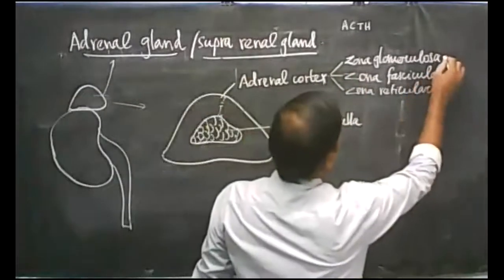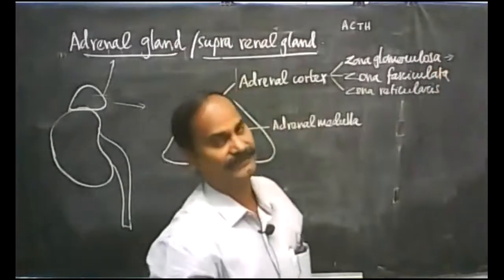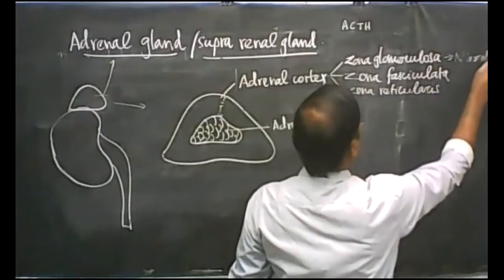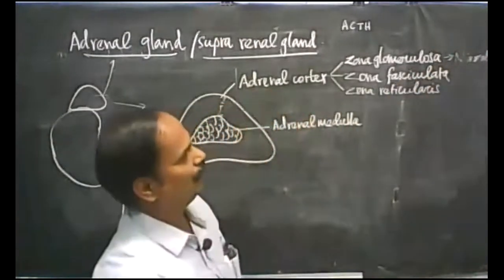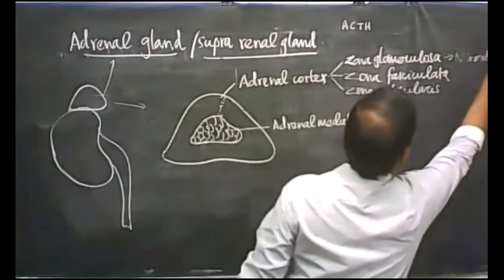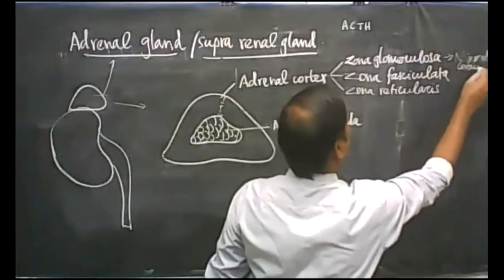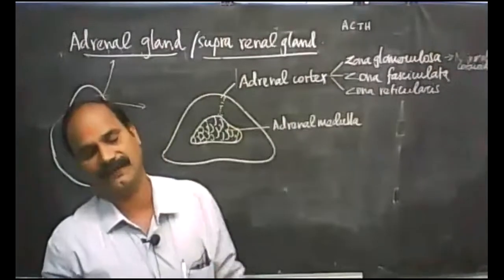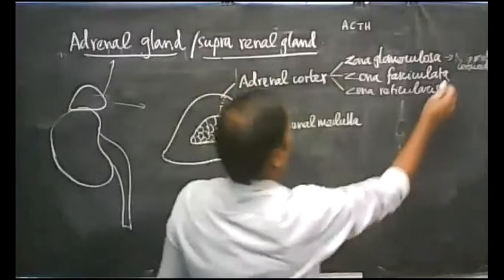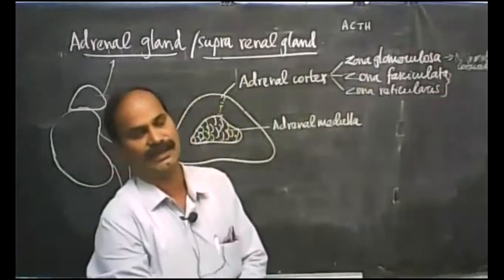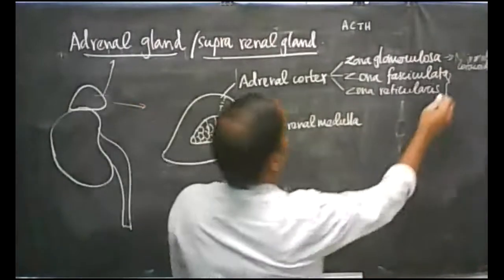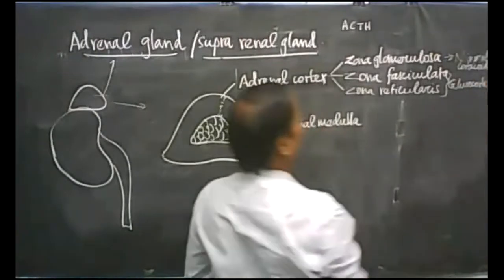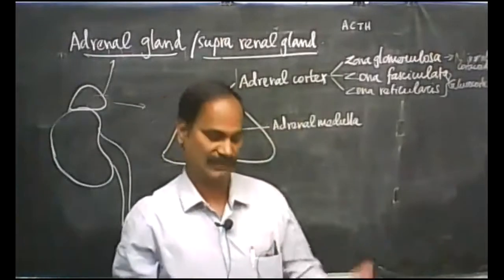Zona glomerulosa acts as a single unit and secretes a hormone called the mineralocorticoid hormone. The major mineralocorticoid hormone is aldosterone. Zona fasciculata and zona reticularis together as a single unit secrete a hormone called glucocorticoid hormone. The major glucocorticoid hormones are cortisone and corticosteroid hormone.